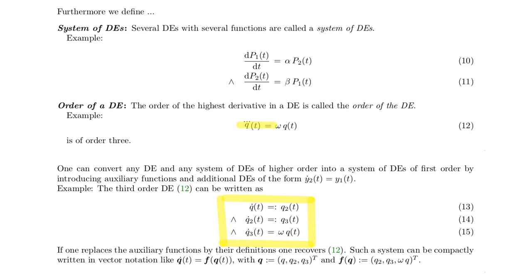This system is equivalent to the third order differential equation seen above. We have introduced two auxiliary functions here: q2, which corresponds to q dot, and q3, which corresponds to q2 dot, which is q double-dot. Then q3 dot effectively is q triple-dot, and we complement this to the differential equation we have here.